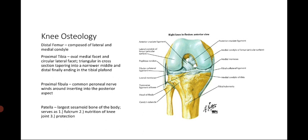For the proximal fibula, it's important because the common peroneal nerve winds around the proximal fibula or fibular neck into the posterior aspect. We also have the patella, which is the largest sesamoid bone of the body with three functions during knee extension: it serves as a fulcrum, provides nutrition to the knee joint, and provides protection of the knee joint.